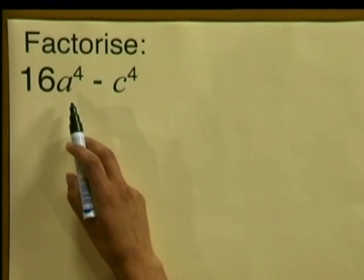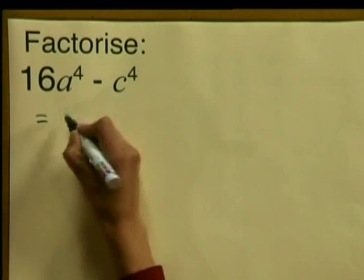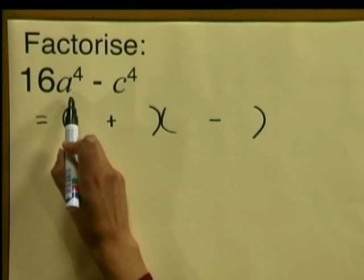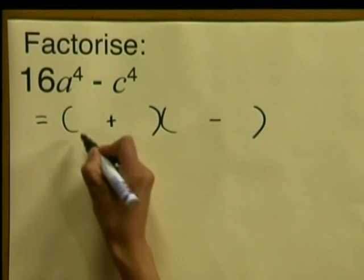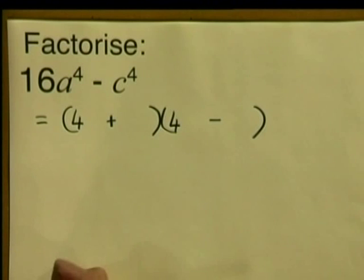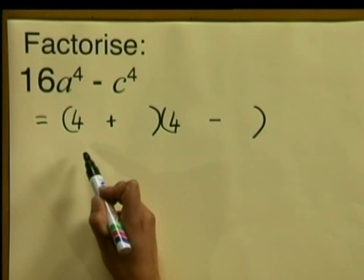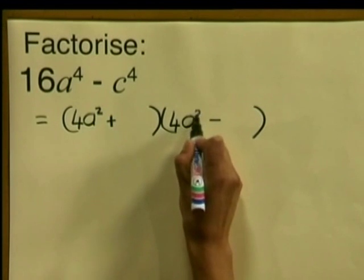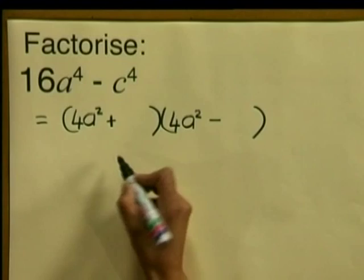Here is the second one: 16a to the power of 4 minus c to the power of 4. We put down our two brackets with a plus sign in one and a minus sign in the other. We find the square root of 16a to the 4: the square root of 16 is 4, and the square root of a to the power of 4 is a squared, because a squared times a squared gives us a to the power of 4. So we write 4a squared in the first place in each bracket. Then the square root of c to the power of 4 is c squared, and we write that in the second place.